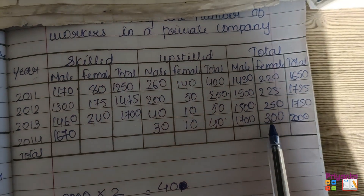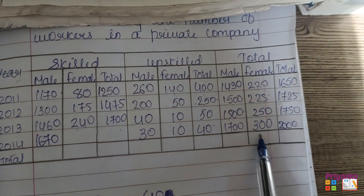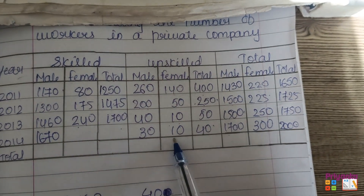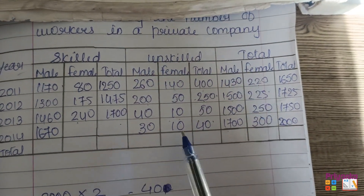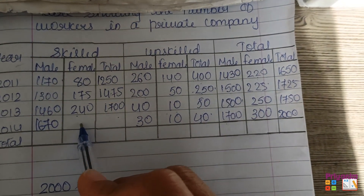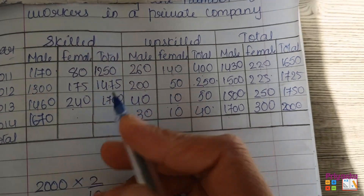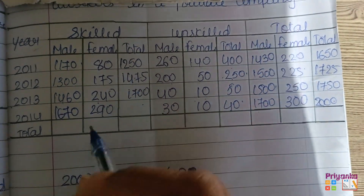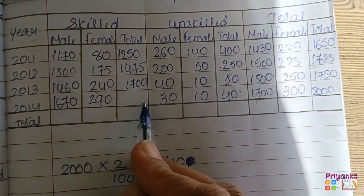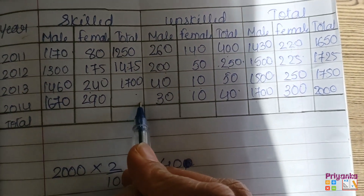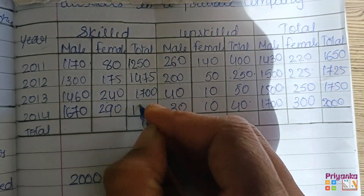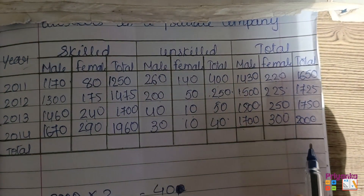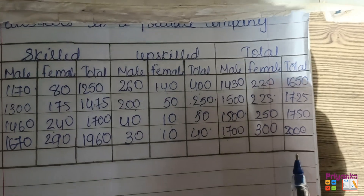The same continues for the number of females. Total females are 300, out of which unskilled are 10. Subtracting gives the skilled number of females, which is 290. Adding these together gives the total number of skilled workers, which is 1960. At the end, just give the total of each column.